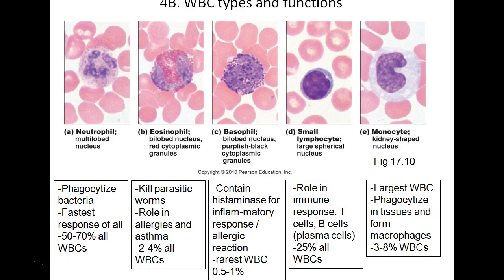Lymphocytes serve in immune cell activity by attacking pathogens and abnormal or infected cells, and they also produce antibodies — called T cells or B cells. Finally, monocytes have a kidney-shaped nucleus and can become macrophages that phagocytize bacteria, fragments, and cellular debris.